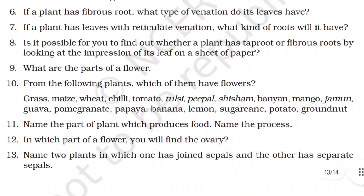Next question: if a plant has leaves with reticulate venation, what kinds of roots will it have? As we just discussed, it will have tap roots. Is it possible to find out whether a plant has tap roots or fibrous roots by looking at the impression of its leaf on a sheet of paper? You can use a pencil and paper to print the leaf impression. The answer is yes — if the venation is reticulate it means tap roots, and if it is parallel it means fibrous roots.